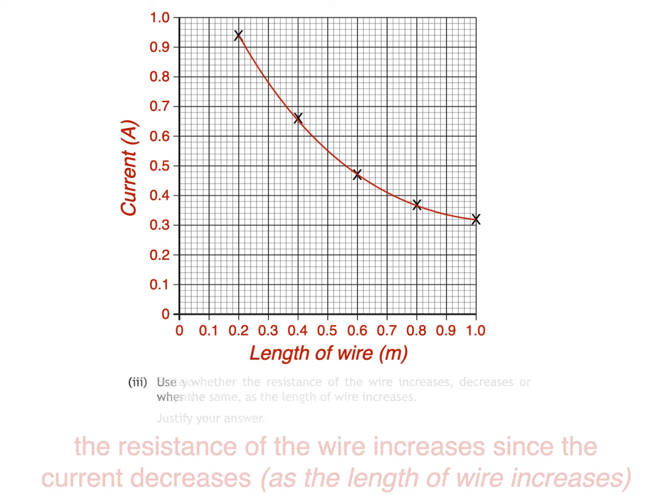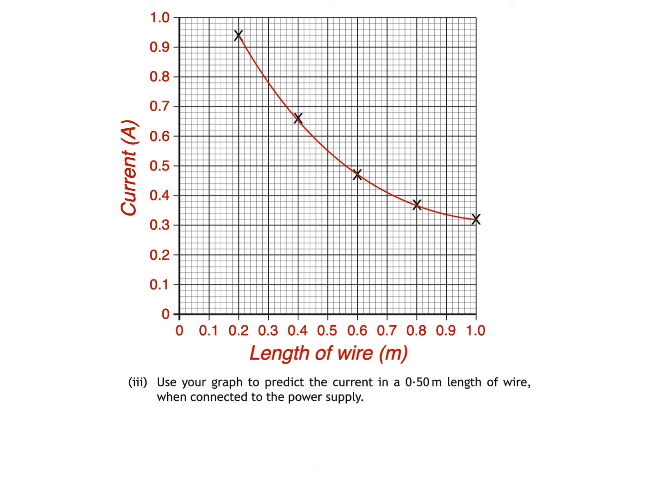Part 3 says use your graph to predict the current in a 0.50 meter length of wire when connected to the power supply. All we have to do here is imagine a line going up from 0.5 meters to where it hits the best fit line, then along to where it hits the y-axis. If you've drawn your best fit line correctly then this should give a current of 0.55 amps.